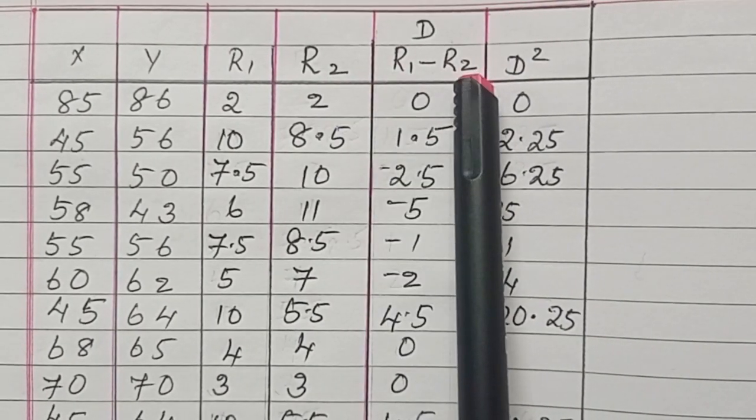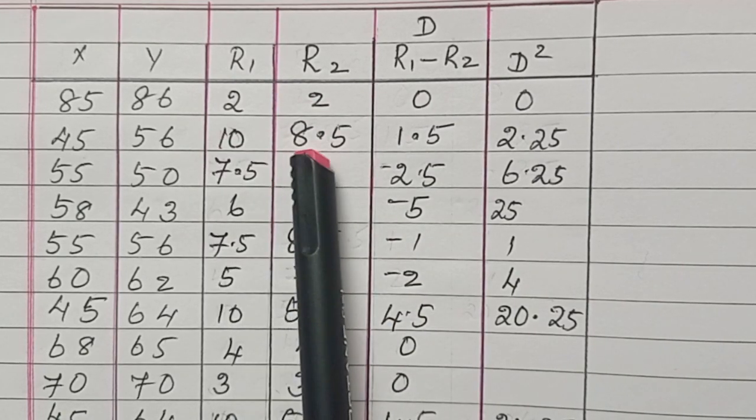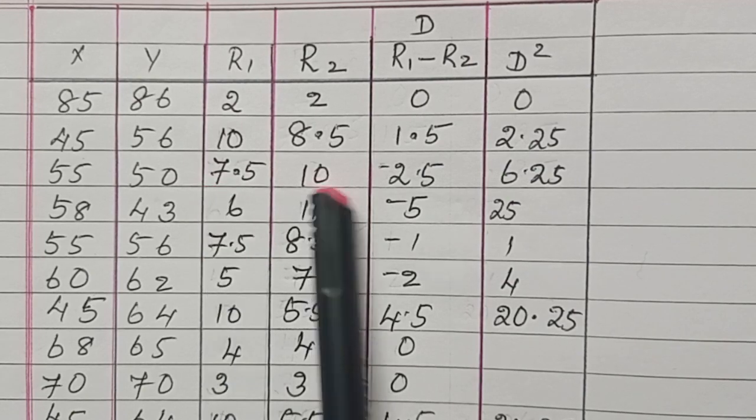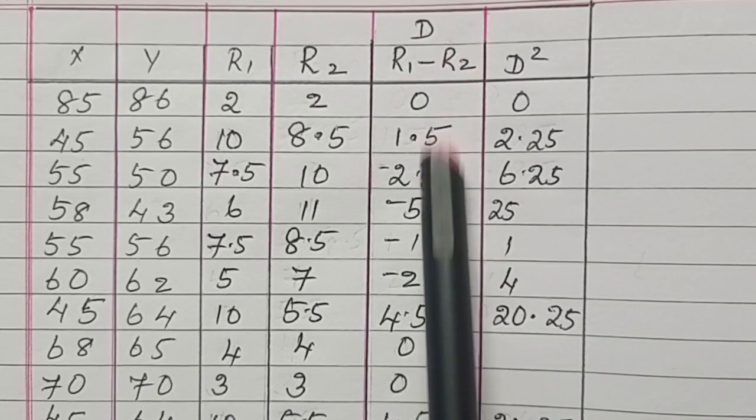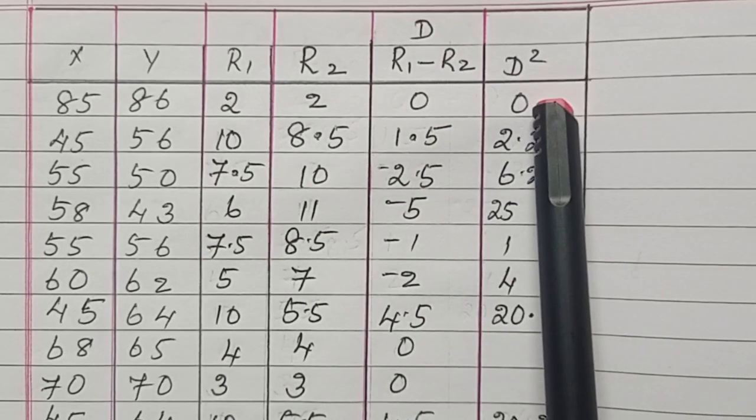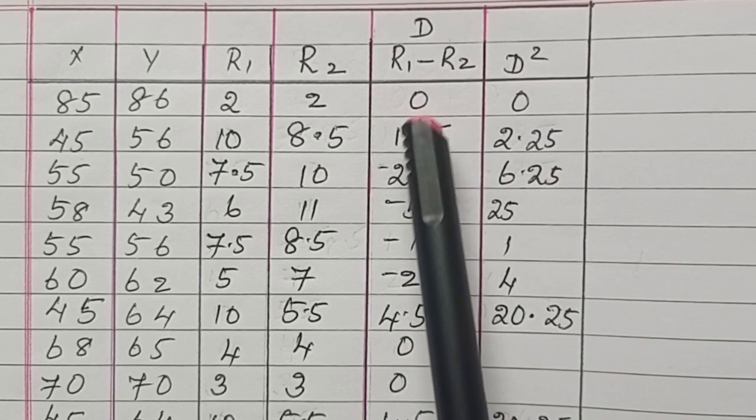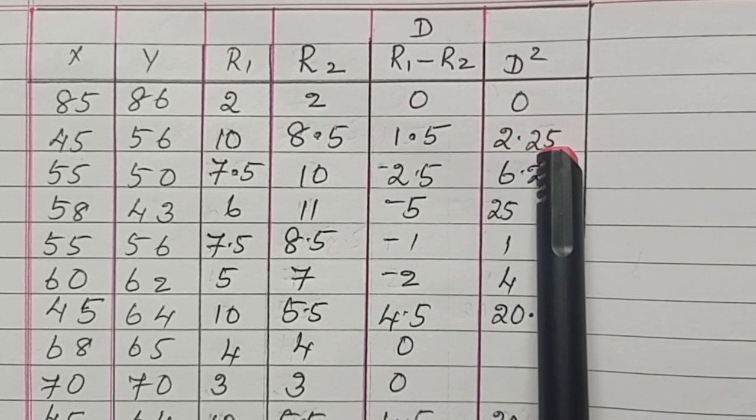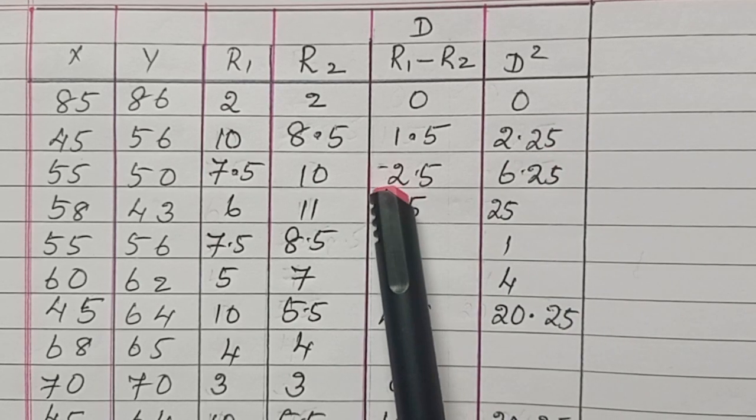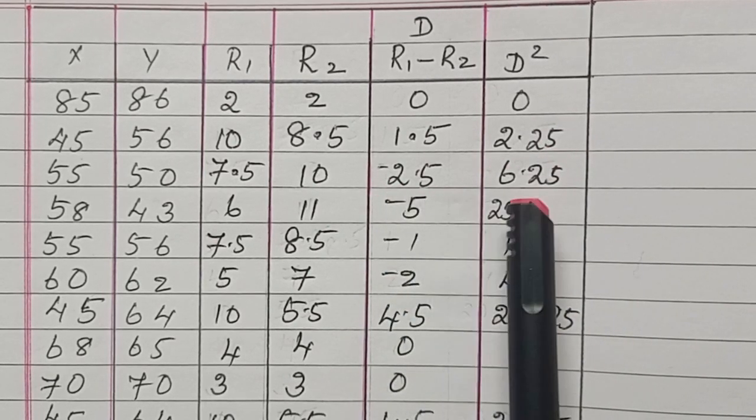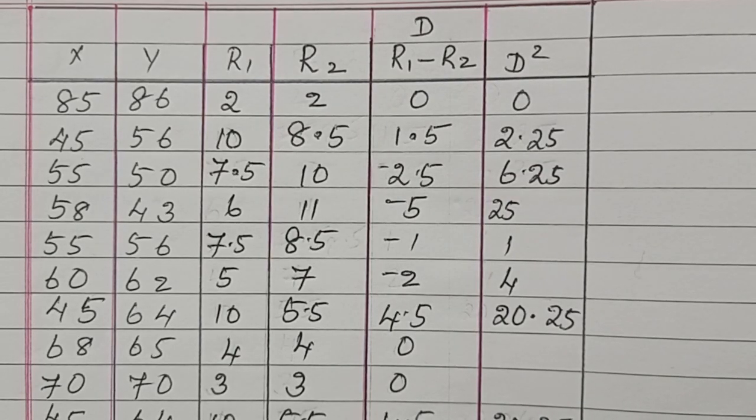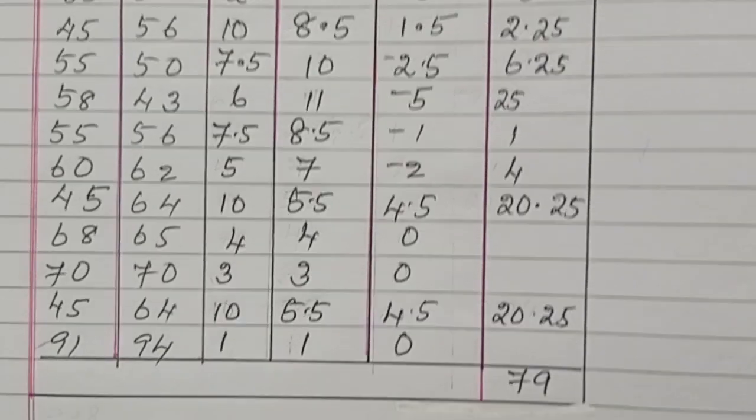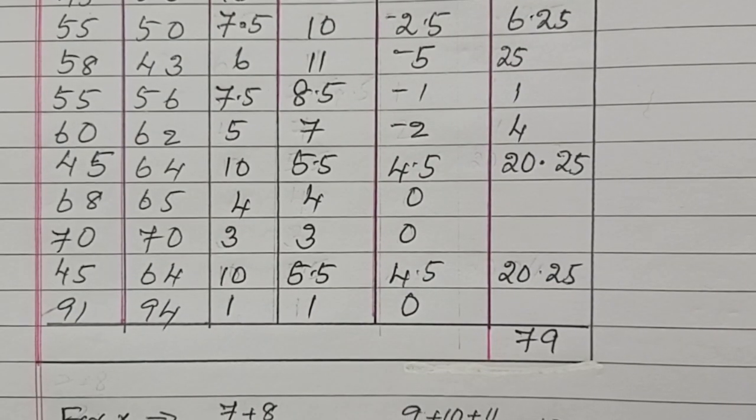Next column is easy, R1 minus R2. 2 minus 2 is 0. 10 minus 8.5 is 1.5. 7.5 minus 10 is minus 2.5. Doing all the things, the next column is square of D. 0 into 0 is 0. 1.5 into 1.5 is 2.25. Minus 2.5 into minus 2.5 is 6.25. After finding all these things, we are adding D squared and get the answer as 79.